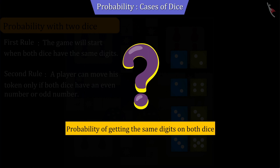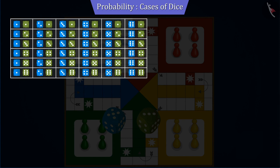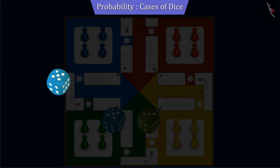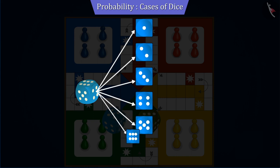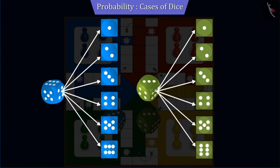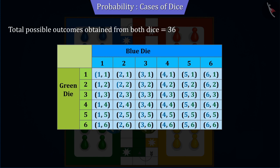Can you now tell what is the probability of getting the same number on rolling both dice? Let's discuss this. Rolling two dice together gives a total of 36 different outcomes, which are indicated in this table. But many students believe that if rolling one die gives six outcomes, similarly rolling two dice together will give twelve outcomes. If you are thinking the same, then it is a wrong understanding, because rolling two dice together gives the total number of possible outcomes as 36.